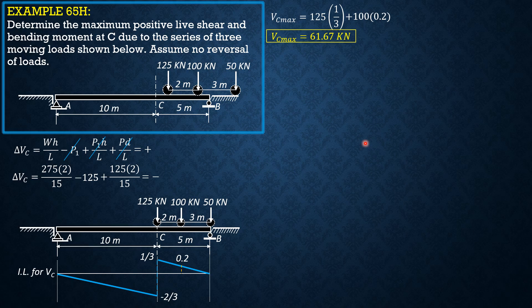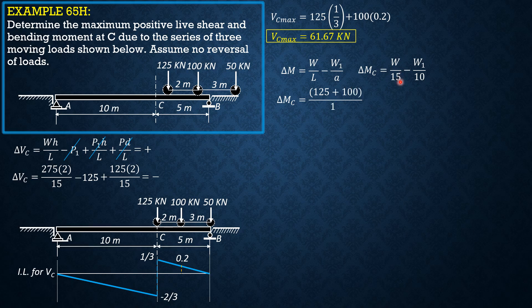For maximum moment, the criterion is delta M sub C equals W over L minus W1 over a. Specifically, delta M sub C equals W over 15 minus W1 over 10. When load 1 is just to the right of C, W would be 125 plus 100 only — the 50 kN load is just to the right of B and not yet on the span. W1 is zero because no load has entered the left segment yet. The result is positive.